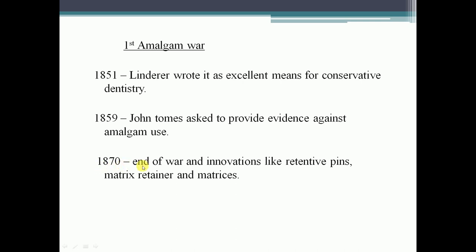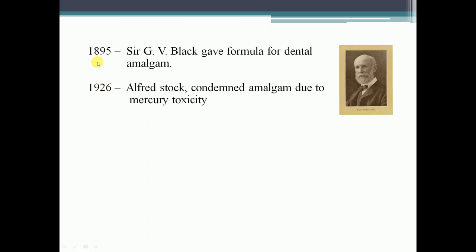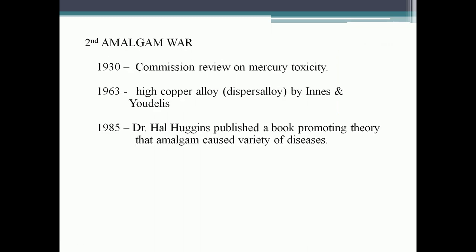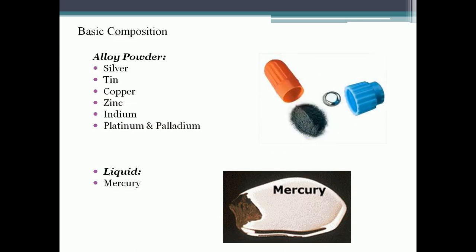In 1870, at the end of the war, innovations like retentive pins, metric retainers, and matrices were introduced. In 1895, G.V. Black gave the formula for dental amalgam. In 1926, Alfred Stock condemned amalgam due to mercury toxicity during the second amalgam war. In 1930, a Commission reviewed mercury toxicity. In 1963, high-yield copper dispersed alloy was introduced. In 1985, Dr. Hal Huggins published a book promoting the theory that amalgam caused a variety of diseases.